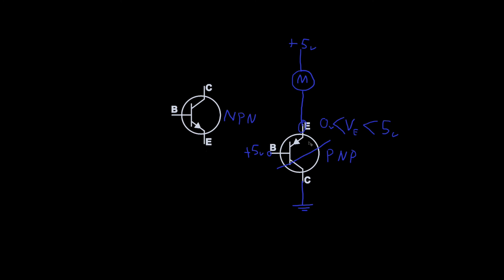Now say we want to switch the motor on. We connect the base to ground instead of plus 5 volts. Ground, or 0 volts, is going to be less than V_E, which means the transistor is going to turn on and allow current from the motor to flow through it, thereby completing the circuit and turning the motor on. That's how you switch a PNP type.